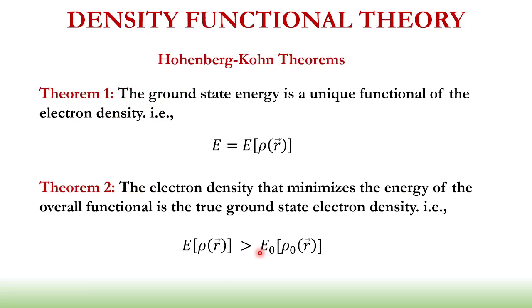Now, the heart of Density Functional Theory lies on this Hohenberg-Kohn theorem. There are actually two theorems that basically describe the overall Density Functional Theory. So theorem number one states that the ground state energy is a unique functional of the electron density, or mathematically, that is, E is equal to E as a function of this electron density ρ(r), which is also a function of our space coordinates.